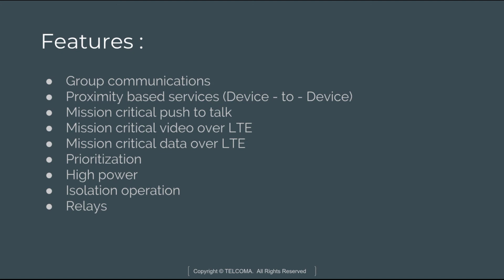Additional features include prioritization, high power isolated operations, and relays. These are the unique features required in a public safety network that are not needed in commercial networks. Some features of the commercial network, like sending email and accessing a database, can also be used in public safety networks. We will discuss these features in detail in our next class. Thank you so much.